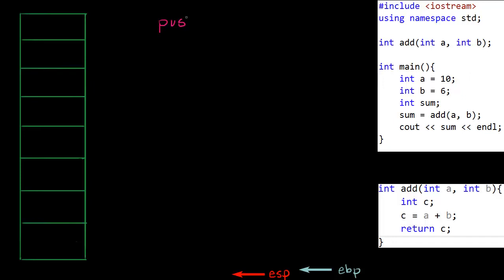It says push this register called EBP and move ESP to EBP. So let's go at this line by line and try to see what exactly it does.